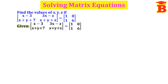Take the given matrix: x-3, 3x-z, x plus y plus 7, x plus y plus z equal to another matrix 1, 0, 1, 6.